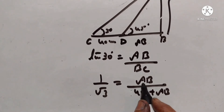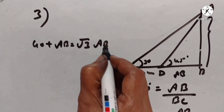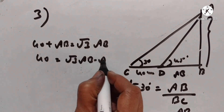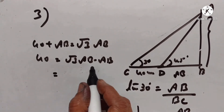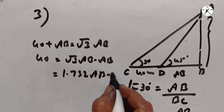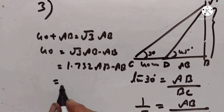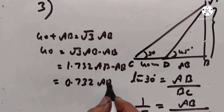So 40 plus AB is equal to square root of 3 times AB. Therefore 40 is equal to square root of 3 times AB minus AB. Square root of 3 equals 1.732, so this is equal to 0.732 AB. Therefore AB is equal to 40 divided by 0.732.